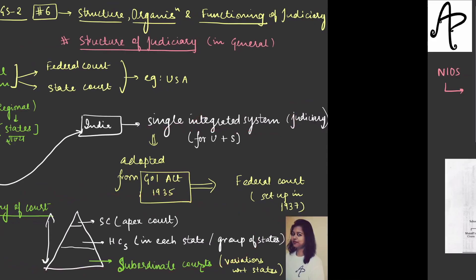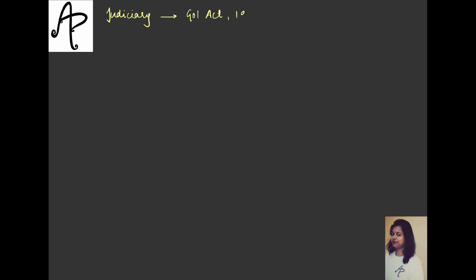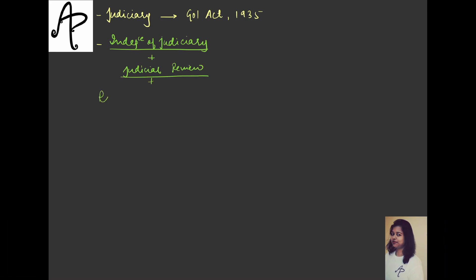One small thing you can check from this section is that we have borrowed different things related to judiciary from different sources. The overall judiciary idea — the single integrated structure — we borrowed from the Government of India Act, 1935. We have also borrowed some things from the US Constitution — for example, Independence of Judiciary, Judicial Review, and the removal of High Court and Supreme Court judges. These facts are important for the prelims.